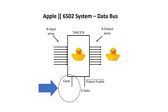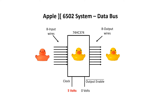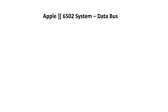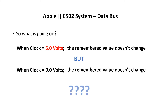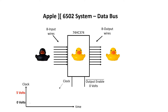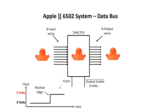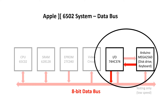The other signal we need to use on the chip is the clock input. When clock is set to 5 volts, it doesn't matter what happens on the input wires — the stored value doesn't change. When clock is set to 0 volts, the stored value still doesn't change. It turns out that the transition from 0 volts to 5 volts on the clock is really when all the action occurs. This is called the positive edge, and this is when the stored value in the chip is updated. In this build, we need two of these chips to interface with the Arduino — one for the read path, and one for the write path.